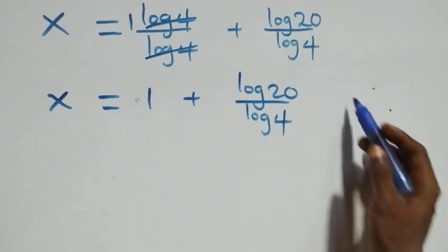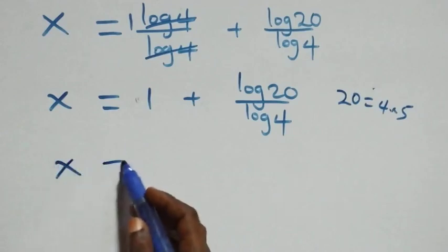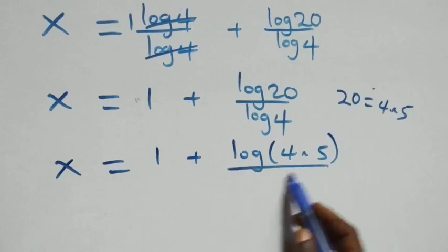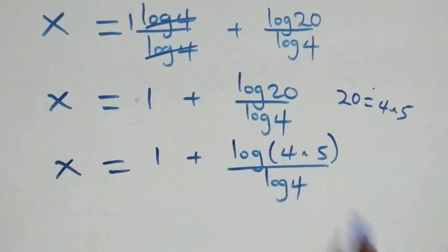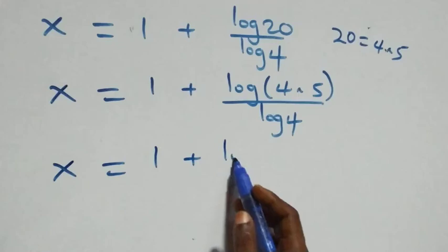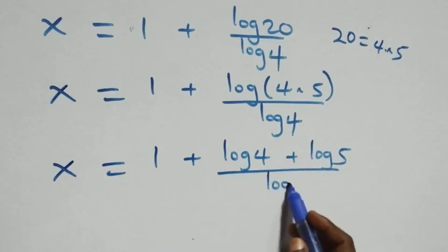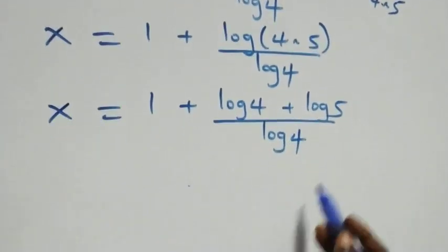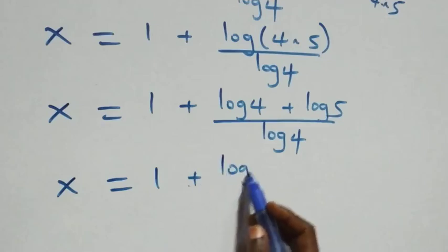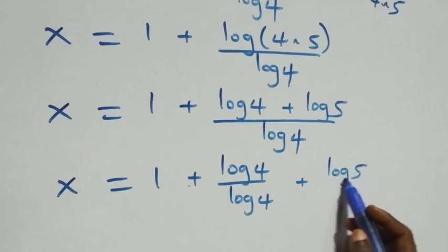We can also express twenty as four times five, so x equals one plus log(four times five) over log four. Applying the product rule again, this becomes x equals one plus (log four plus log five) over log four. Separating into two fractions gives x equals one plus log four over log four plus log five over log four.